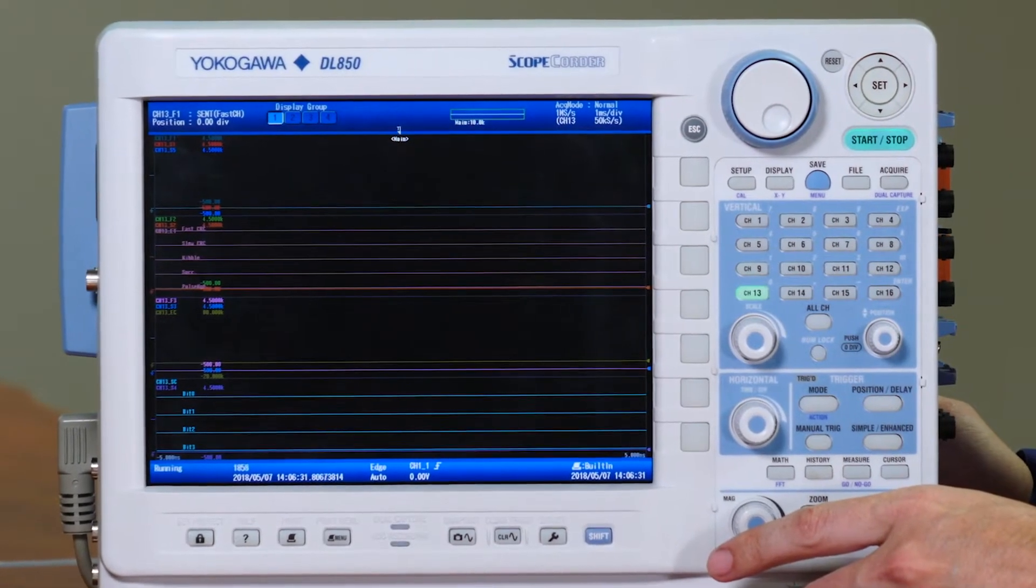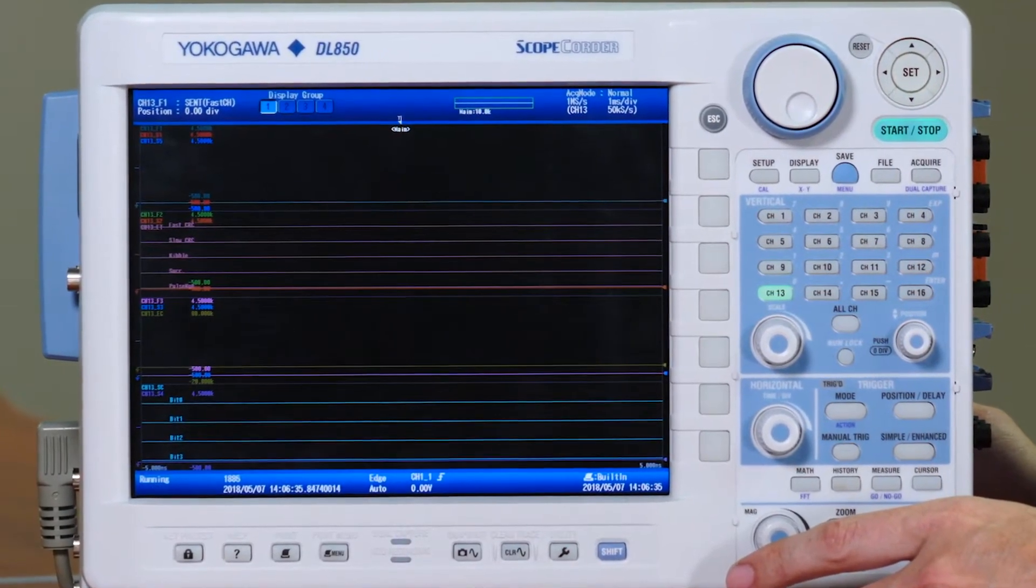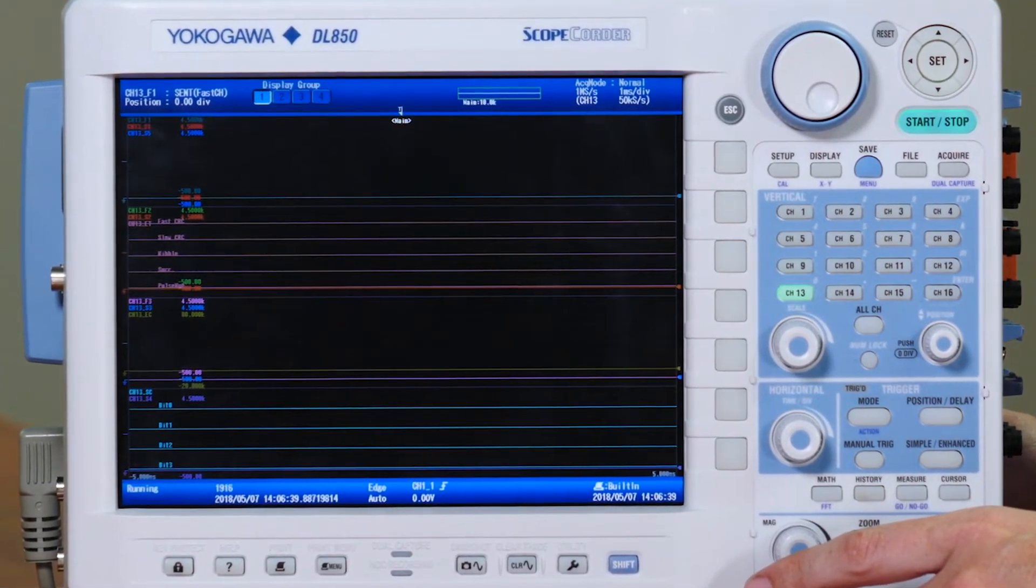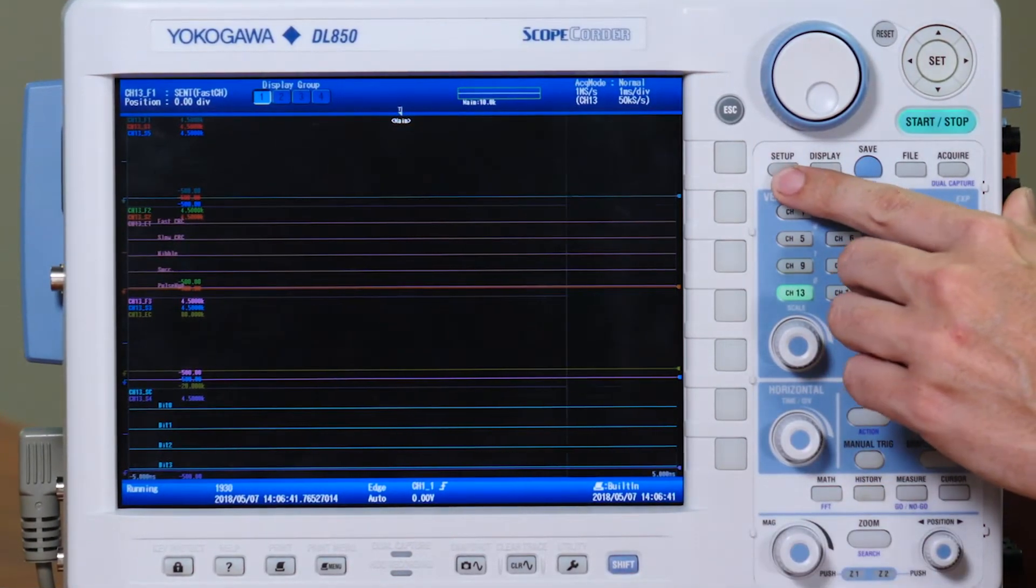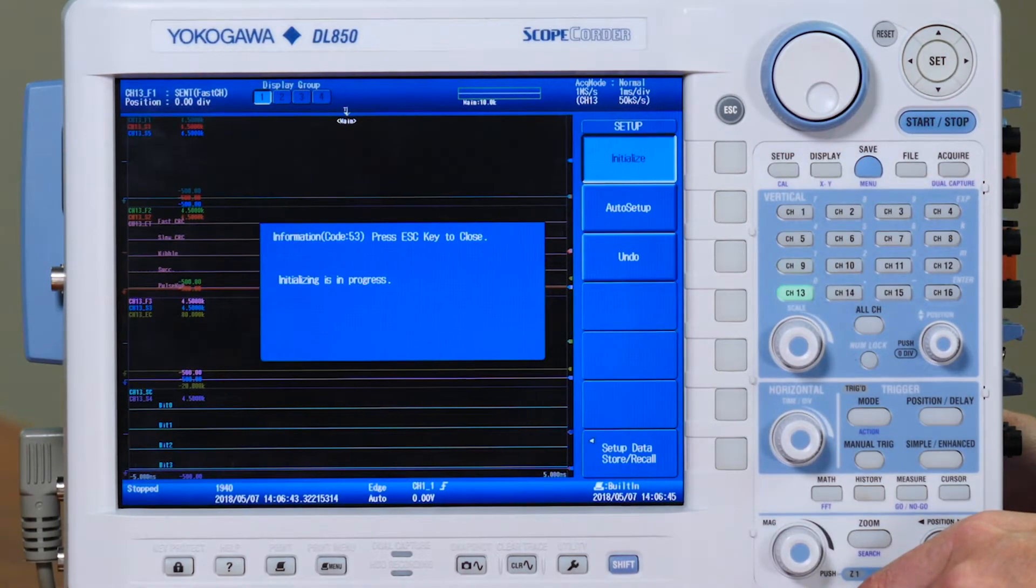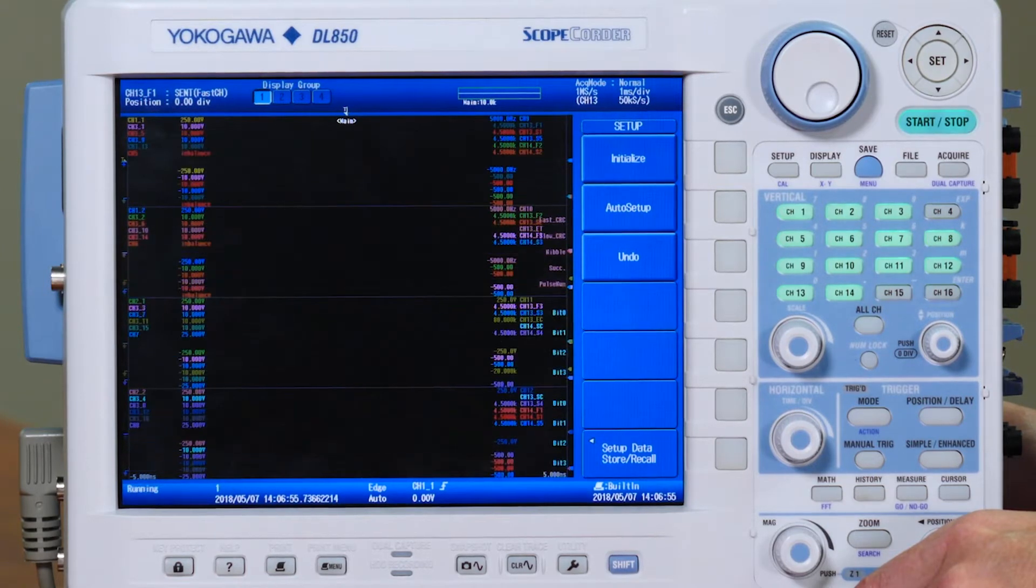The first step to begin measurement after the module has been installed in the correct location and the DL850EV has been powered up is to initialize the settings. We do this by pressing Setup, Initialize. I like to do this so that we start with a clean slate and no past settings get in the way of our current measurements. This will take a few moments, and when the procedure is finished all available channels will be displayed.